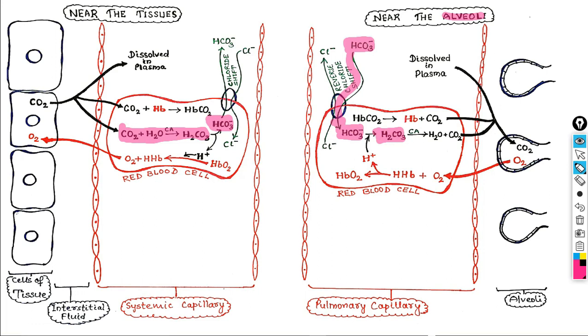To summarize: near the tissues, bicarbonate ion goes out of the RBC because if it accumulates, it causes this reaction to slow down. Near the alveoli, bicarbonate ions come back into the RBC to maintain the rate of carbonic acid formation and supply bicarbonates for that reaction. I hope this is clear — if you find any difficulty, please let me know via the comment section.